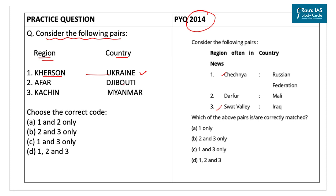Kherson was previously captured by Russia during the ongoing Russia-Ukraine conflict. The second pair is the Afar region matched with Djibouti, which is incorrectly matched — the Afar region is a regional state in northeastern Ethiopia, home to the Afar people. Its capital is the city of Semera. The Afar triangle, the northern part of which is the Danakil depression, is part of the Great Rift Valley of Ethiopia. It has the lowest point in Ethiopia and is one of the lowest points in Africa. This place has also witnessed conflict in recent times.